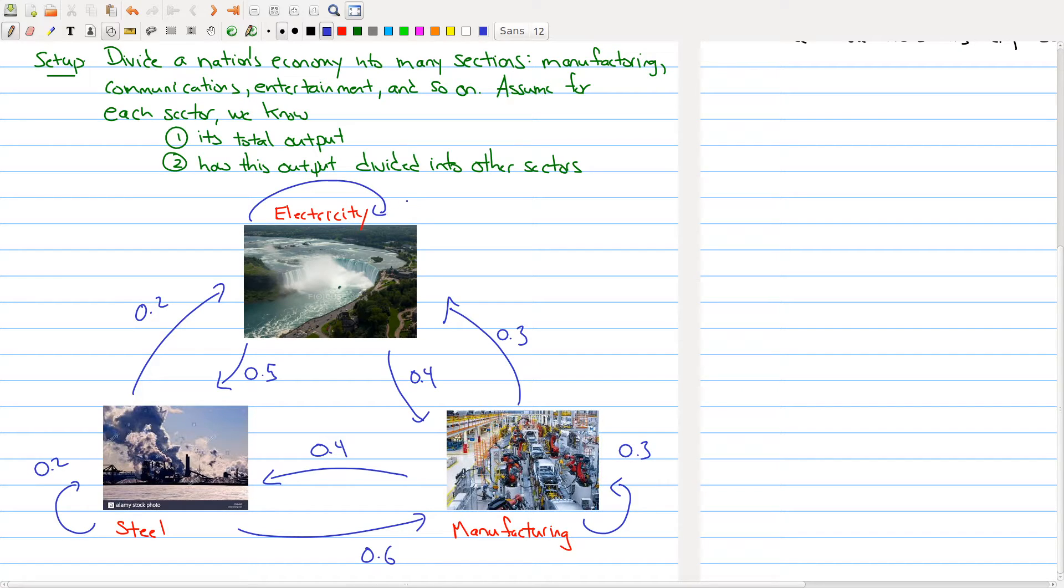And electricity will send 10% of its output back to itself. Just so that you're clear about what all these numbers mean, if we're looking at all the arrows around here, 30% of manufacturing goes to electricity, 40% goes to steel. All right, that's this 40%. And we had 30% going to itself.